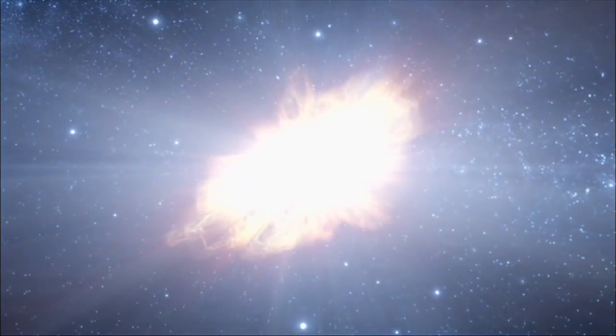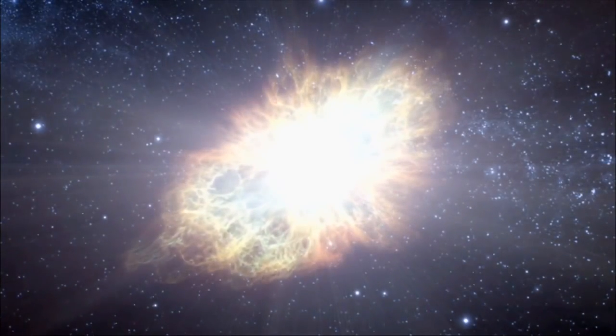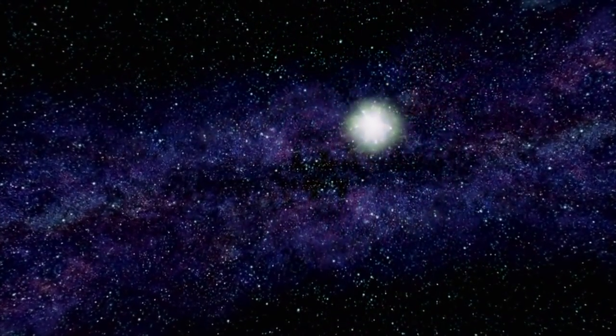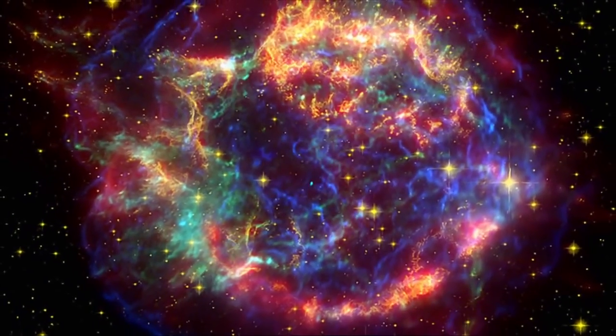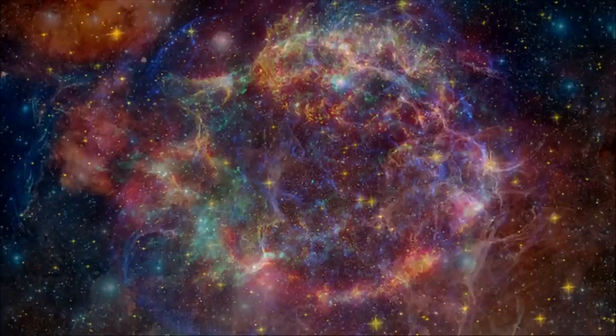It faded away almost as quickly as it appeared and today, we can see it only through telescopes. But what's left of it is spectacular. A thousand years later, we call it the Crab Nebula, one of a variety of nebulas known as supernova remnants. Supernova remnants are essentially the expanding debris clouds from the stellar explosion of a really massive star. It's the death explosion of that massive star at the end of its life.